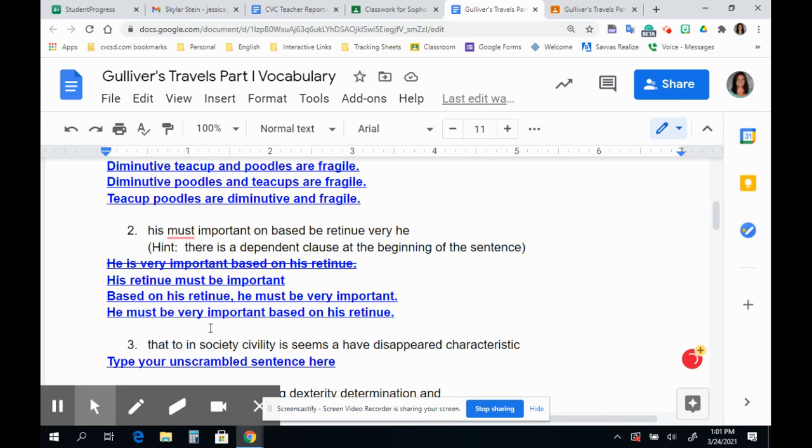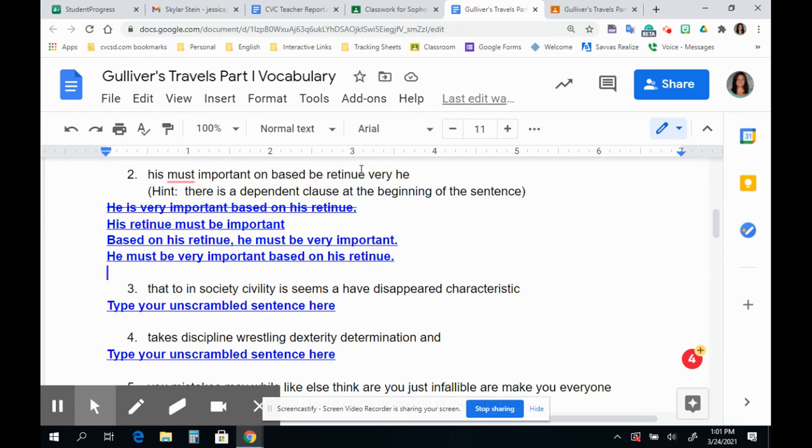I also had to really look at the words that I was defining to create a sentence. Like, obviously, if I'm using retinue, I have to use it as a noun in the sentence because that is the part of speech that that word is. You can't use it as an adjective because it is not an adjective. So you really need to think about how you're using your words.